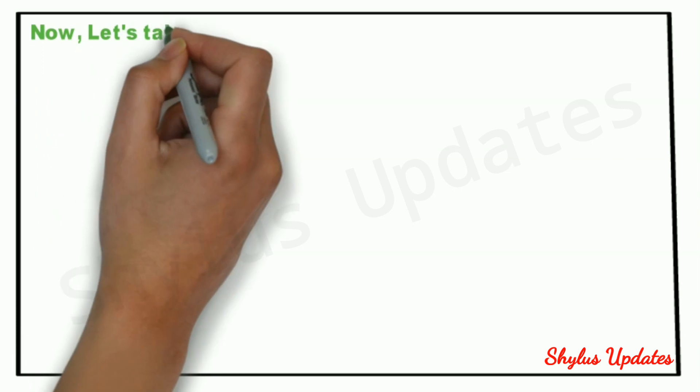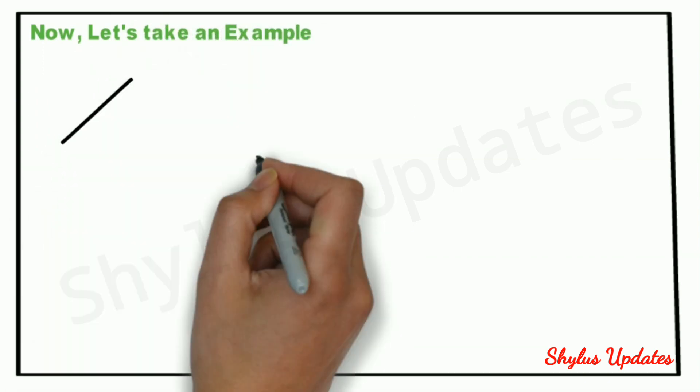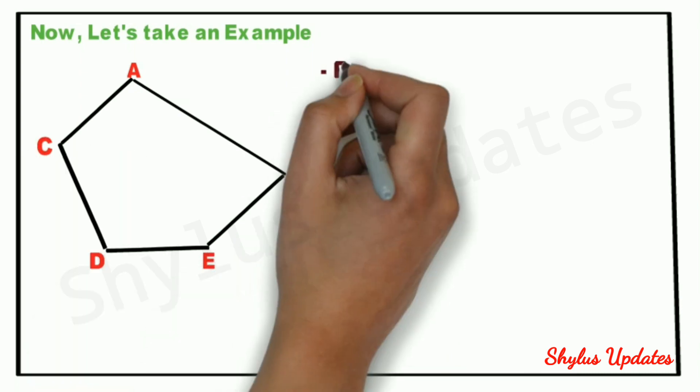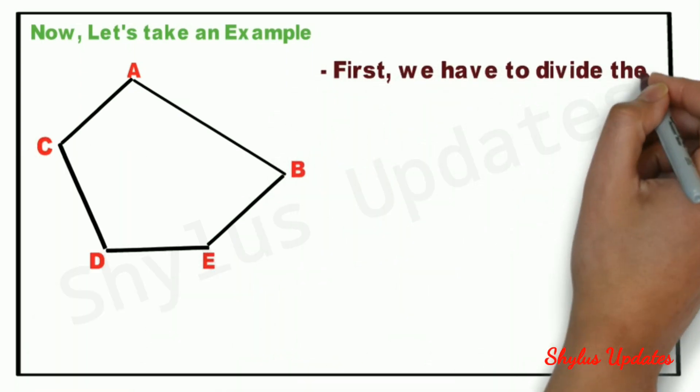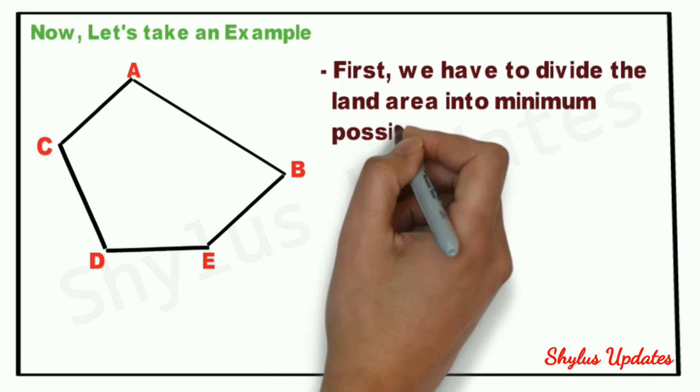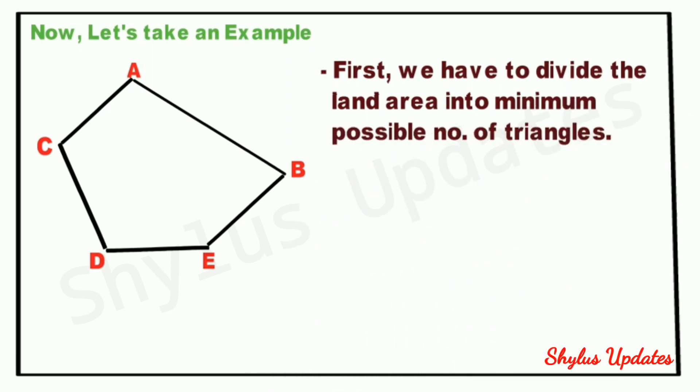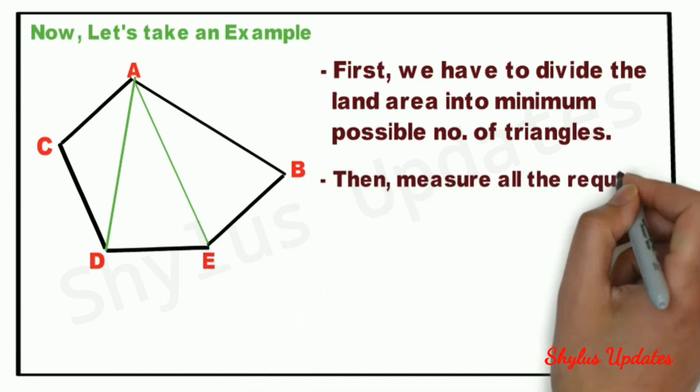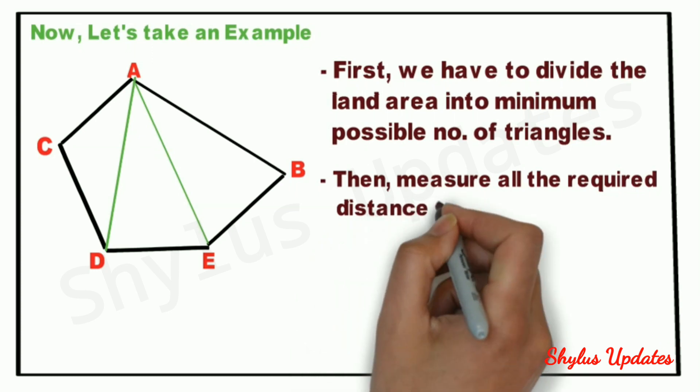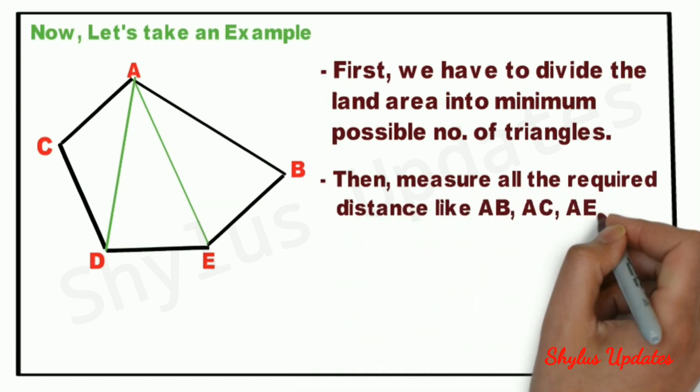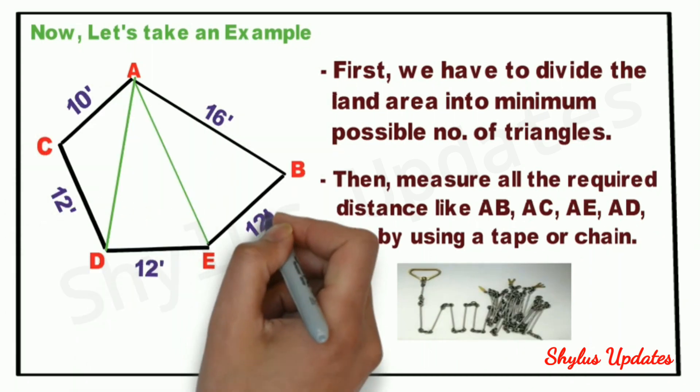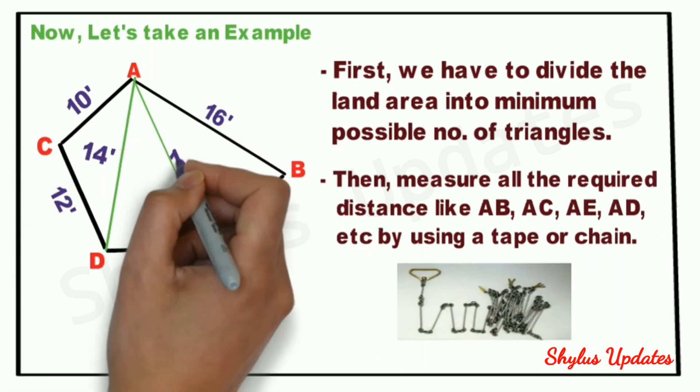Now, let us take an example. Consider this as an irregular shaped land. First, we have to divide the land area into the minimum possible number of triangles—AD and AE. Then measure all the required distances like AB, AC, AE, AD, etc. by using a chain or tape. After measuring, mark the values like this.